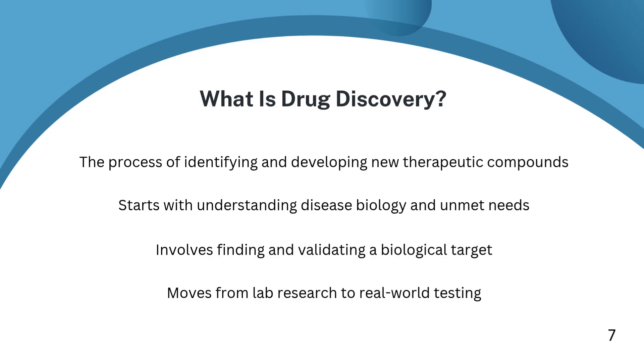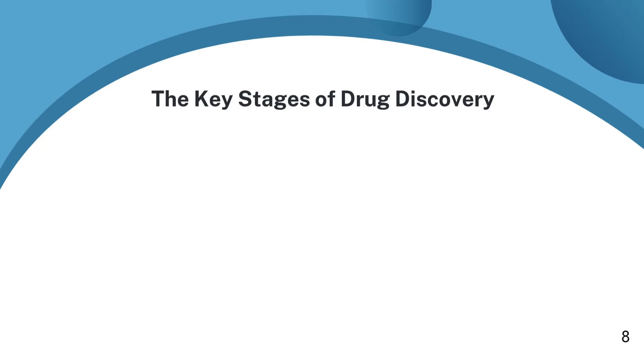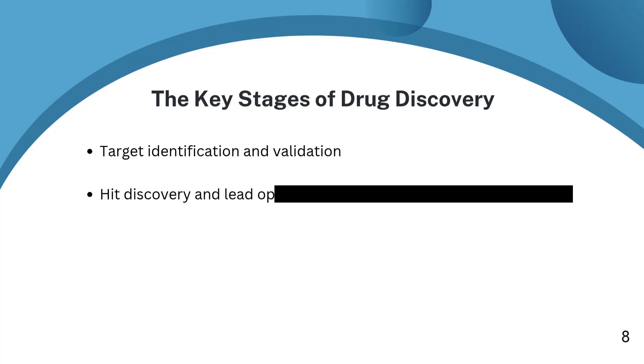The journey can be divided into five main stages. The first stage is target identification and validation. Scientists search for biological targets, usually proteins or genes, that play a key role in the disease process. Once identified, these targets must be validated to prove they can be safely and effectively modulated.